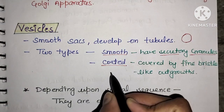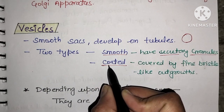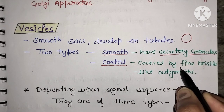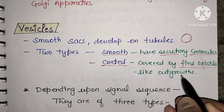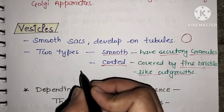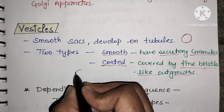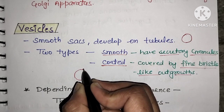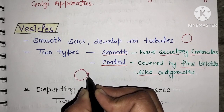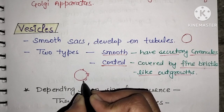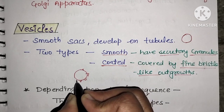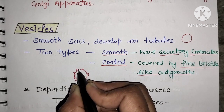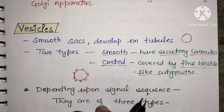Coated vesicles have fine bristle-like outgrowths present on their surface. Because of these bristles, we call them coated vesicles.